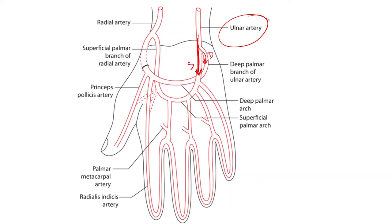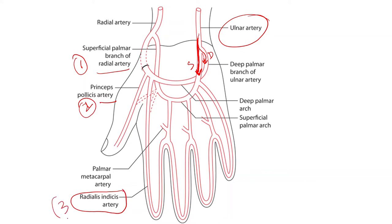This superficial branch of the ulnar artery is seen along the palmar aspect of the hand distal to the flexor retinaculum, and it is completed by anastomosing with the superficial branch of the radial artery. Or sometimes it may be completed by anastomosing with the principal pollicis artery, or it may also be completed by anastomosing with the radialis indicis artery.